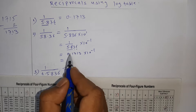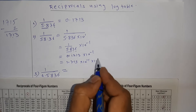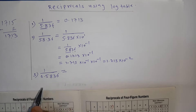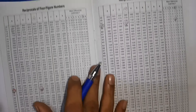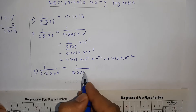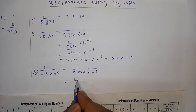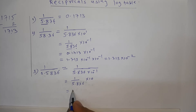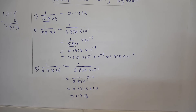You can shift this decimal, so you can write it as 1.713 × 10⁻² — that is 1.713 × 10⁻². For the third example, 0.4836: the table goes from 1 to 9.9, so again we shift the decimal and write it as 5.836 × 10⁻¹. Shifting the 10⁻¹, the reciprocal of 5.836 gives 0.1713, so the final answer is 0.1713 × 10 = 1.713. Thank you, students.